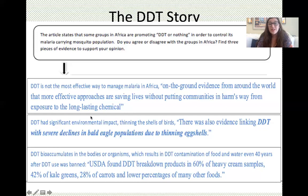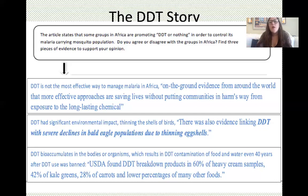There are alternatives to DDT that may be even more effective and won't have this detrimental environmental impact — not just on human consumers of agricultural products, but on all other animals in the ecosystem. Chemicals like DDT that are persistent in the environment and continue up the food chain are very hazardous. Additionally, DDT has significant environmental impact, for example thinning the shells of birds — there was evidence linking DDT with severe declines in bald eagle populations due to eggshell thinning.